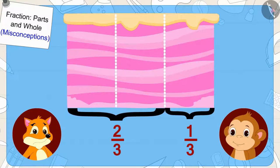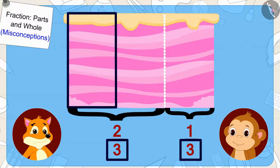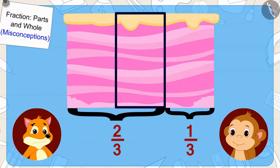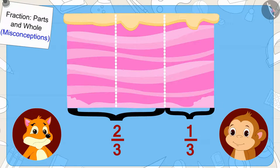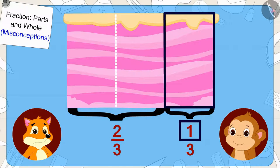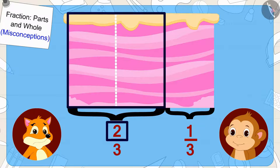Children, the fox has divided the cake into three equal parts. But are they both getting equal amounts of cake? The fox was once again fooling Babban. The fox has divided the cake into three equal parts, but Babban has got only one part while the fox has got two parts.